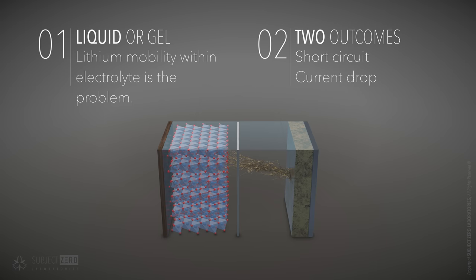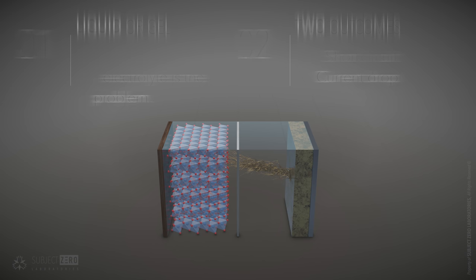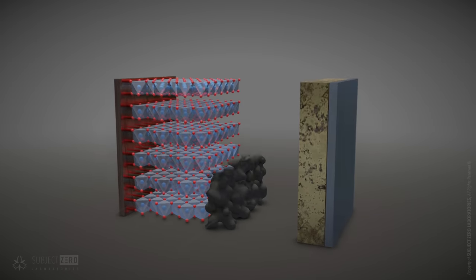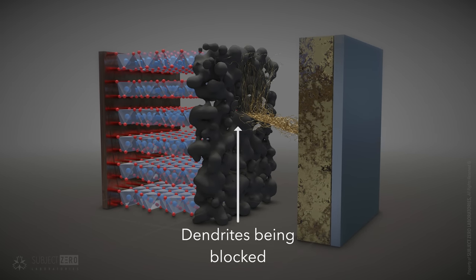Dendrites represent a problem because they either lead the battery to short-circuit or, if you suppress them, current is reduced. The goal of a solid-state electrolyte is to stop dendrites from forming while allowing ions to move through.